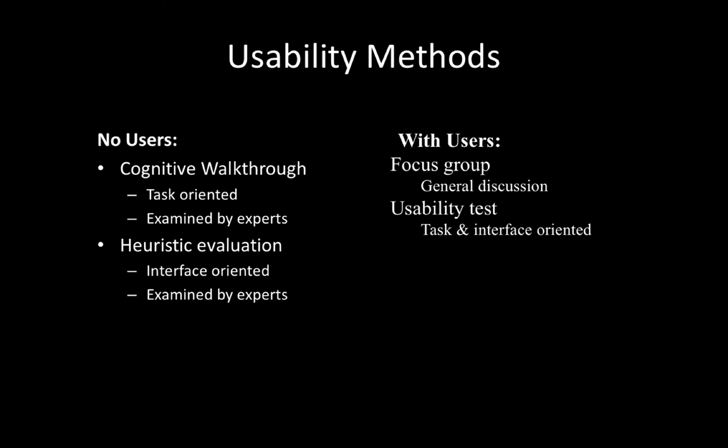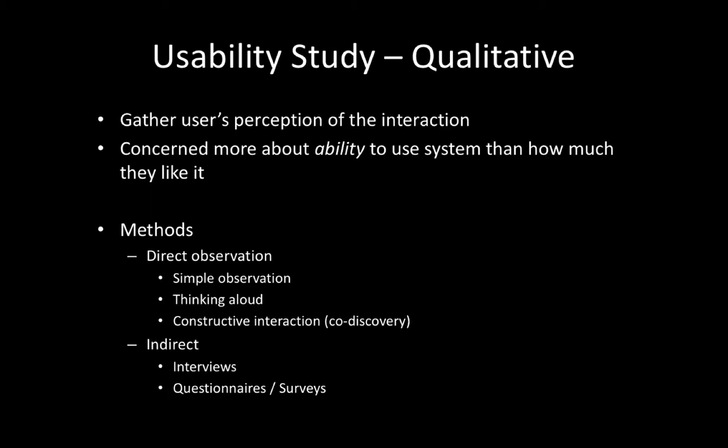Last week we talked about cognitive walkthroughs and heuristic evaluations. Today we're talking about usability tests — you can also do focus groups — which are oriented around having subjects come in, do tasks on the interface, and tell you about their user experience. These are called qualitative usability studies because we're not doing tons of measuring. They tend to be smaller — you'll often run them with five, maybe ten people at most.